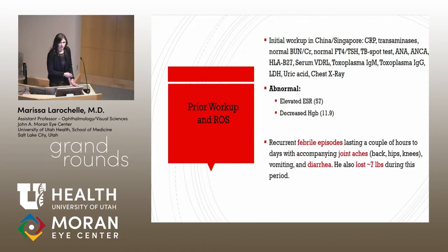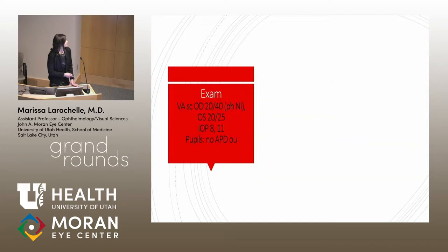Very disturbing to the parents were recurrent episodes of fever, arthritis, diarrhea, and some weight loss over the last several months. On presentation to us, visual acuity was slightly diminished to 20/40 in the right eye and 20/25 in the left, with normal low pressures.